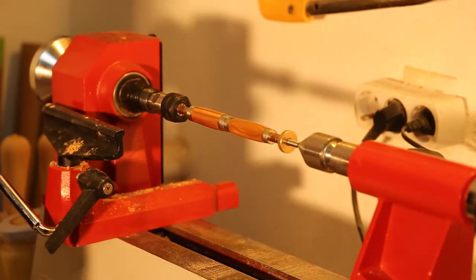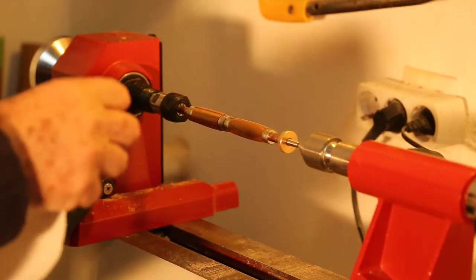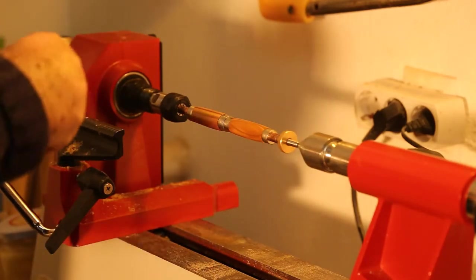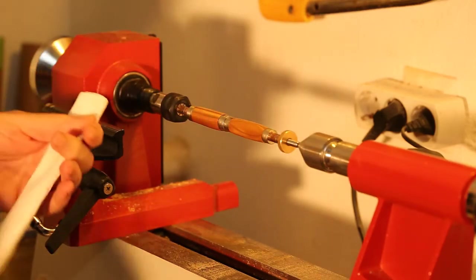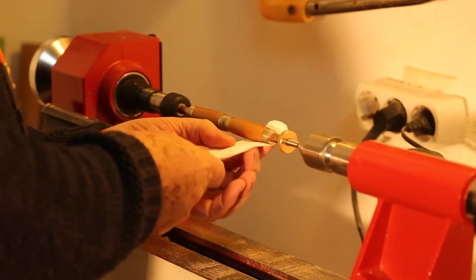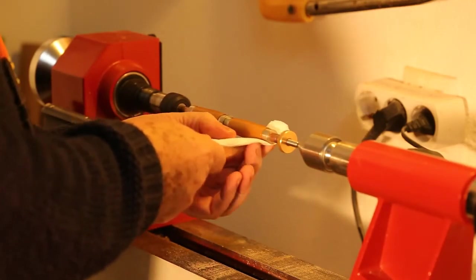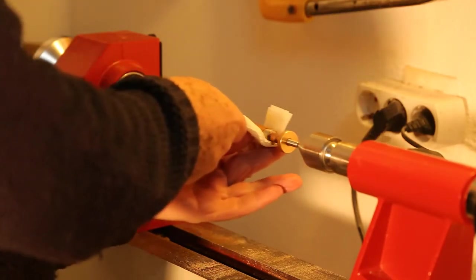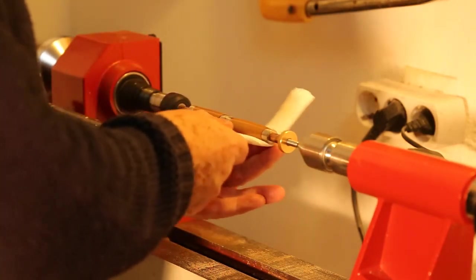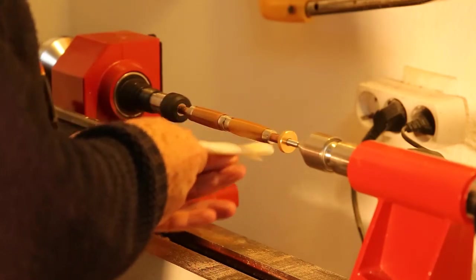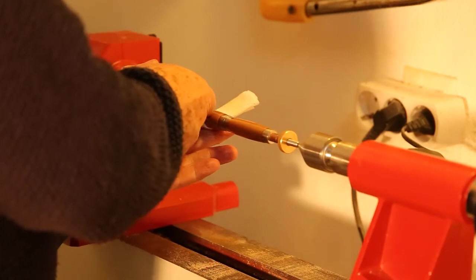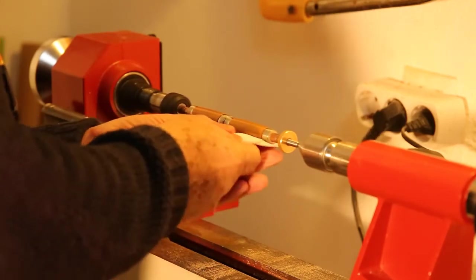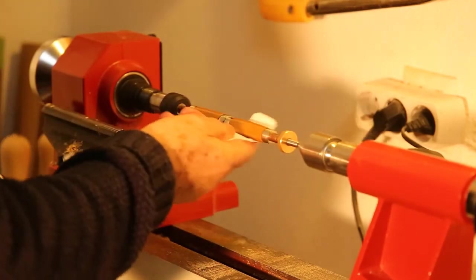Let it sit for a few seconds. And using the paper towel again, buff it off. Once you don't see any more polish coming off onto the paper towel, that's it finished. And now we're ready to assemble the pen.